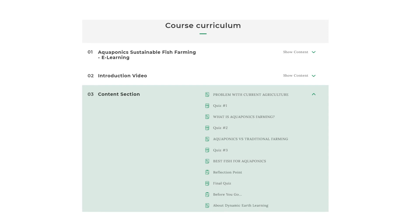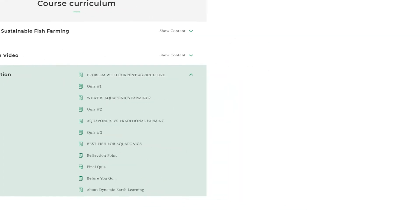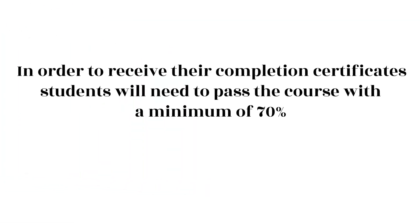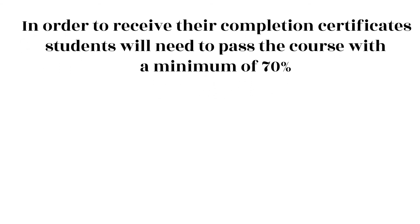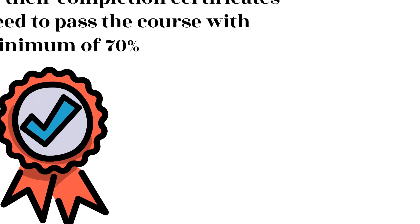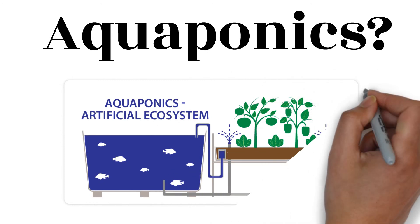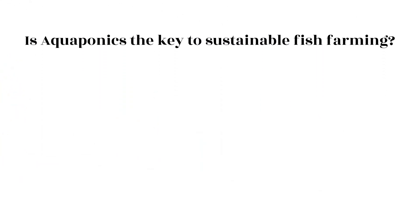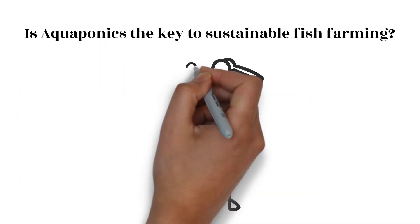In order to receive their completion certificates, students will need to pass the course with a minimum of 70 percent. By the end of this four-class bundle, your student should have a good idea of what aquaponics is and if they truly believe it is the sustainable fish farming method for the future.